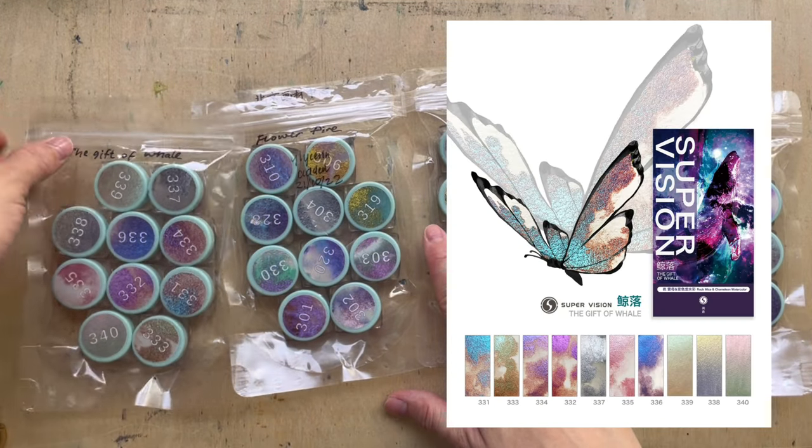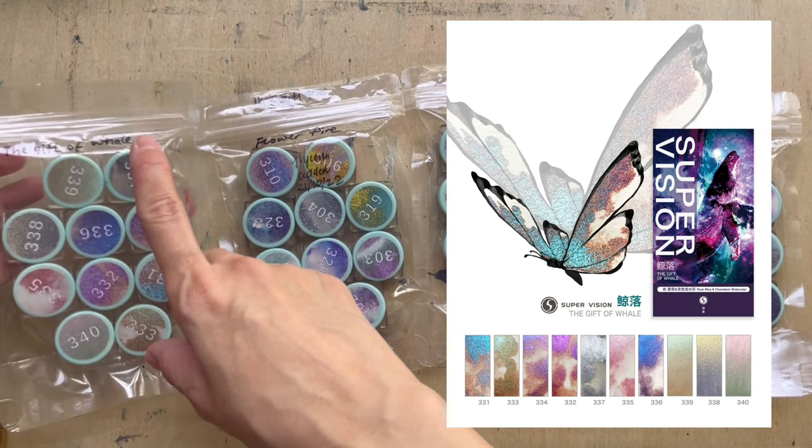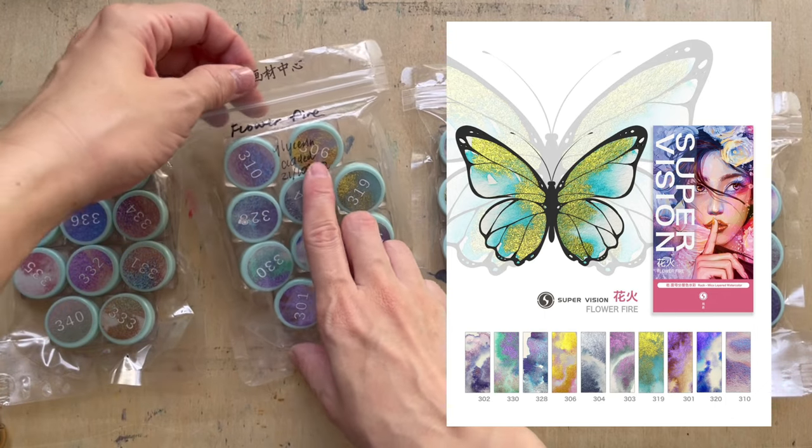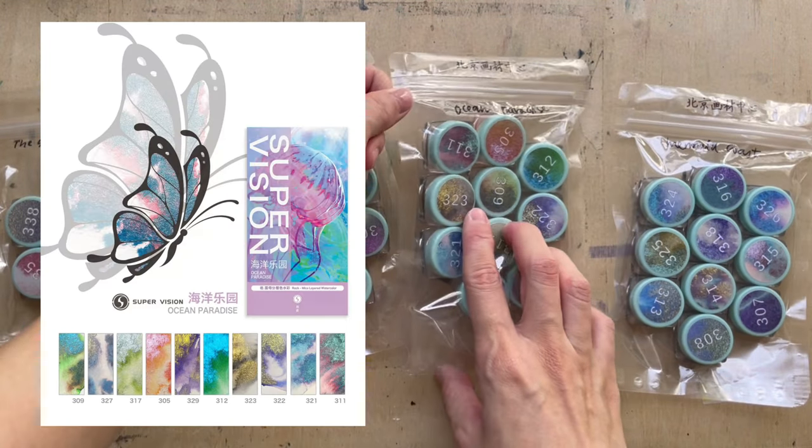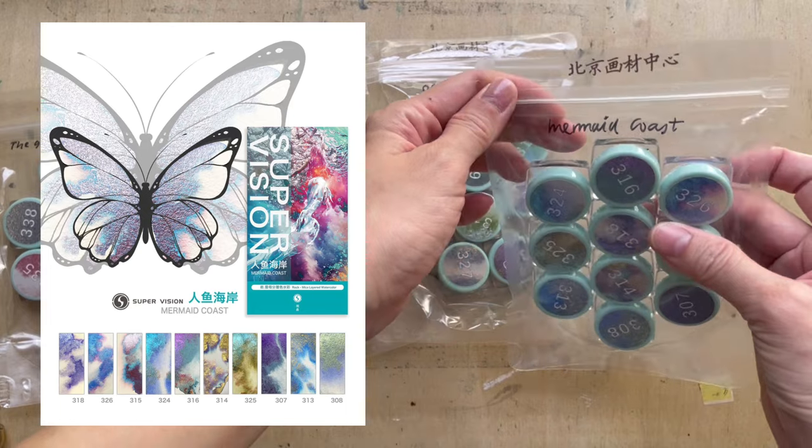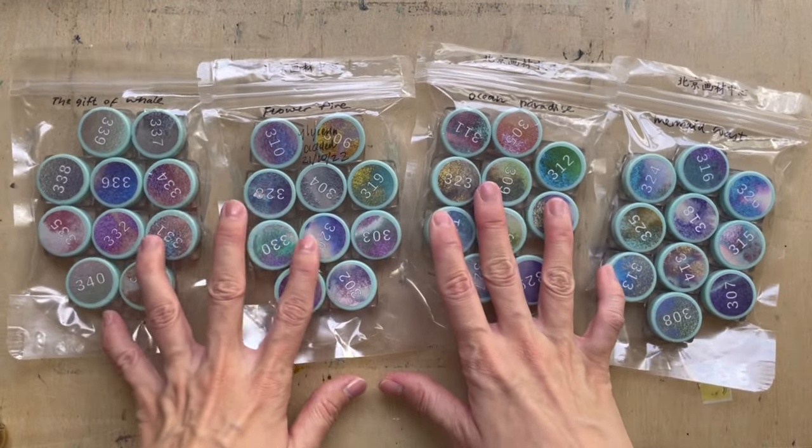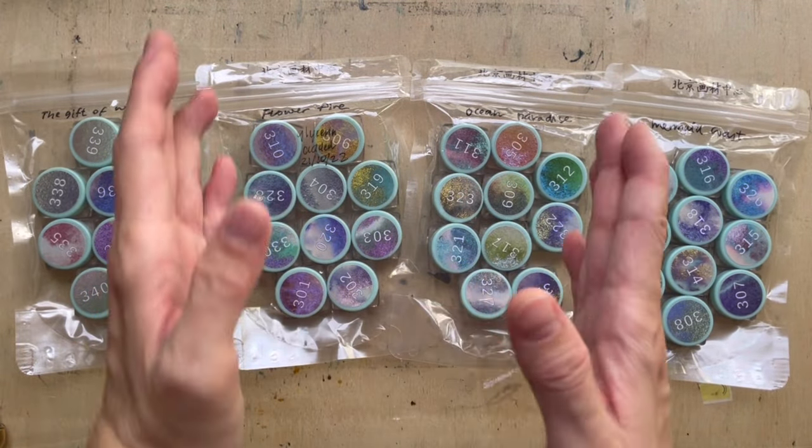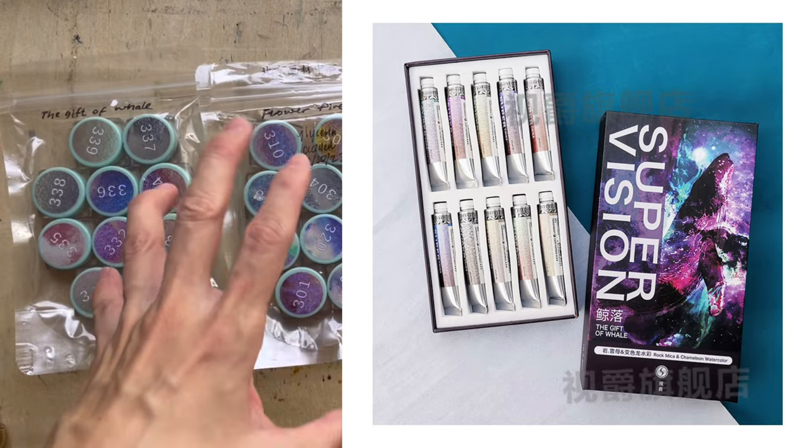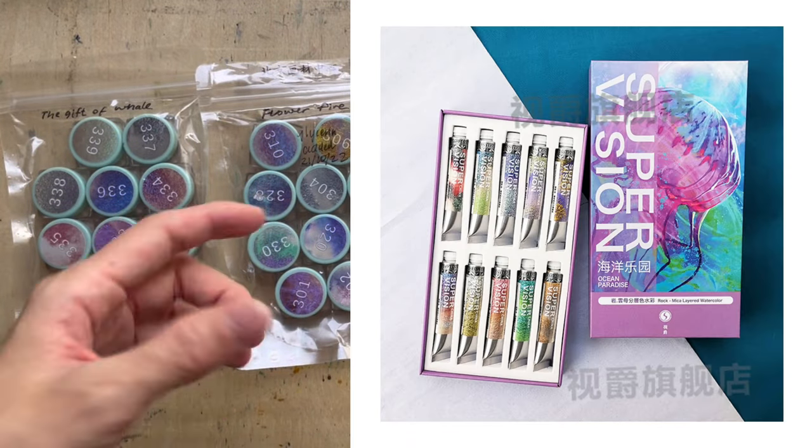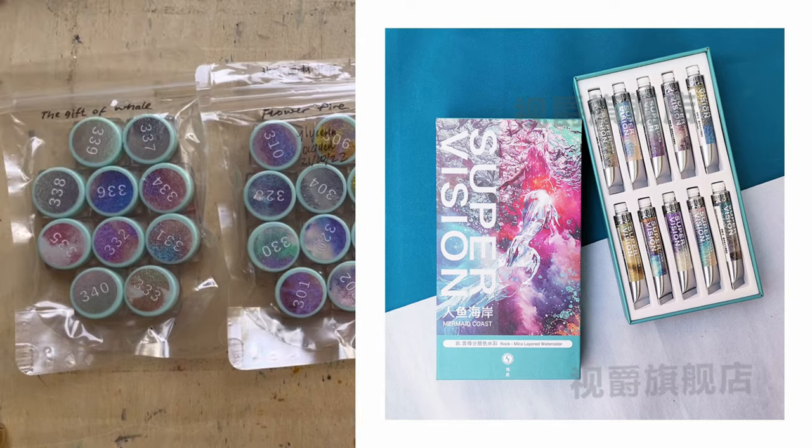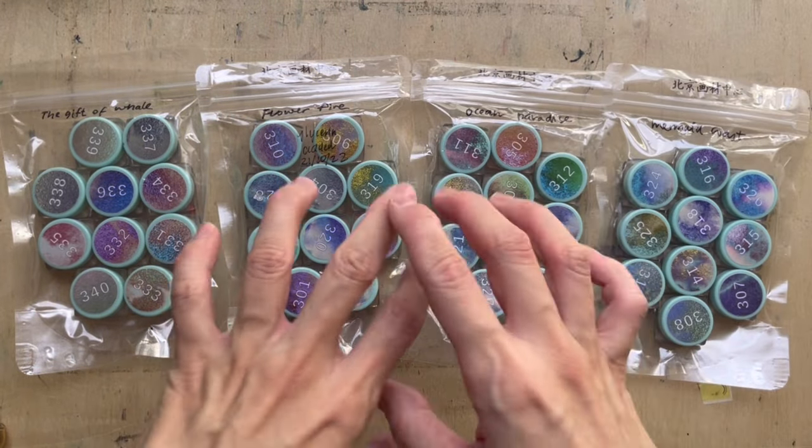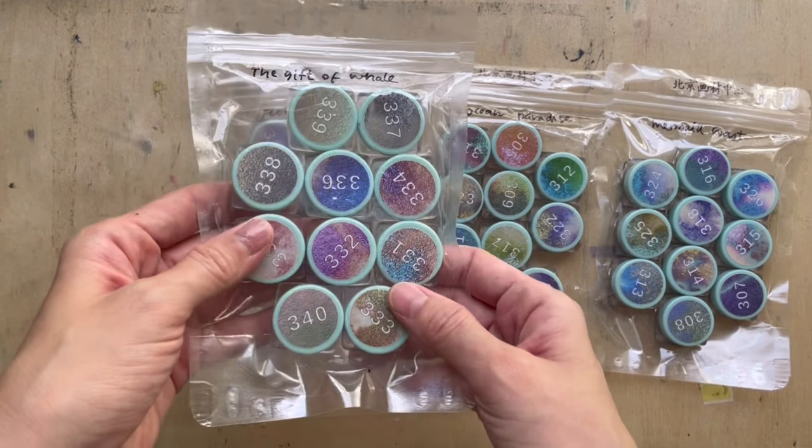The four sets are the Gift of Whale, Flower Fire, Ocean Paradise, and the Mermaid Coast. They don't come like that, of course. They come in a nice set of about 10 times 8 mils or 5 mils of watercolor. It comes in a beautiful box, but I didn't do that. What I did was I got samples.